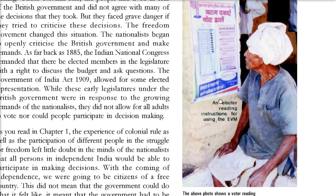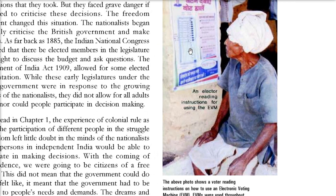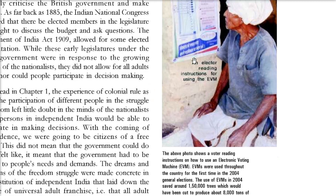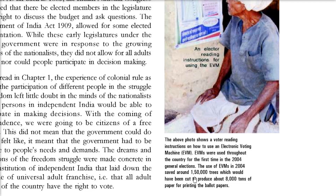Here is a person reading instructions for using the EVM. From 2004 onwards, India has started using EVMs. We have saved around 1,50,000 trees - that is 8,000 tons of paper - that was used for printing ballot papers. Now we have just curtailed that.